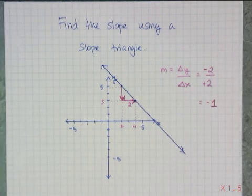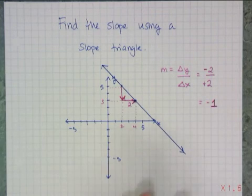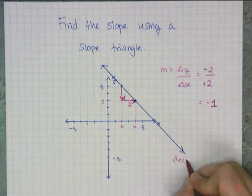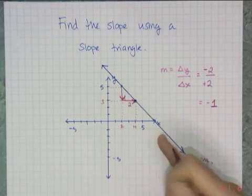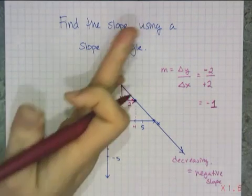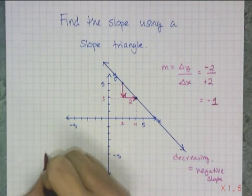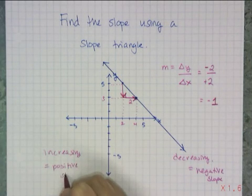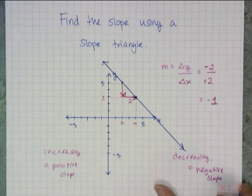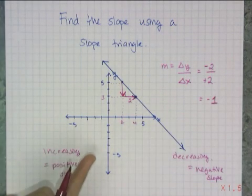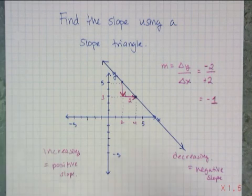The number one missed thing in slope is the sign, because people mess up negative signs all the time. If you're given a graph, there's a quick and easy way to determine if the slope is positive or negative: if the line is decreasing or going down, the slope is negative; if the line is going upward or increasing, the slope is positive. When we did transformations of linear functions, a negative number multiplied by x meant decreasing, and a positive number meant increasing — that number multiplied by x was actually the slope.